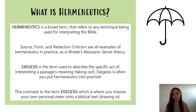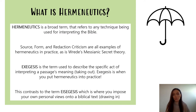We have looked at hermeneutics before, i.e. we have been looking at different ways in which people interpret the Bible. For example, source, form and redaction criticism are all ways in which the Bible has been interpreted. And equally, Wrede's Messianic secret theory is a technique used to interpret Mark's gospel. So we have seen hermeneutics in action across the Edexcel course.